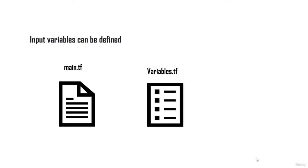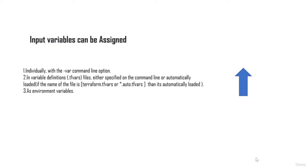Once you've declared variables, you can assign values in multiple ways. The most important is using the '-var' flag when running terraform apply. A second option is using .tfvars files, where you can assign values to already-declared variables. You can also assign variables using environment variables. The precedence is: environment variables have the least precedence, while the '-var' command-line flag has the highest precedence.